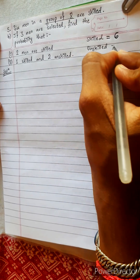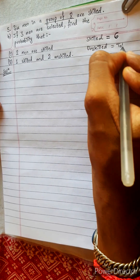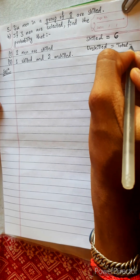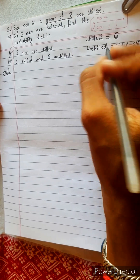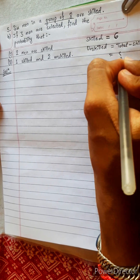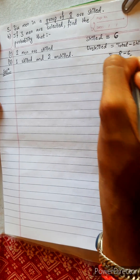Unskilled equals total minus skilled. Total eight minus six.